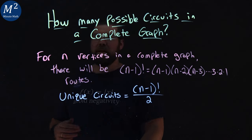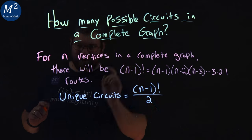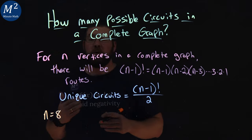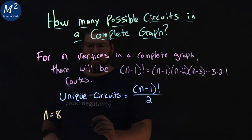So how many unique circuits, let's say, if we have a complete graph, again, this only works for complete graphs. We have, let's say, n equals 8. So how many unique circuits are there when n equals 8, n vertices?